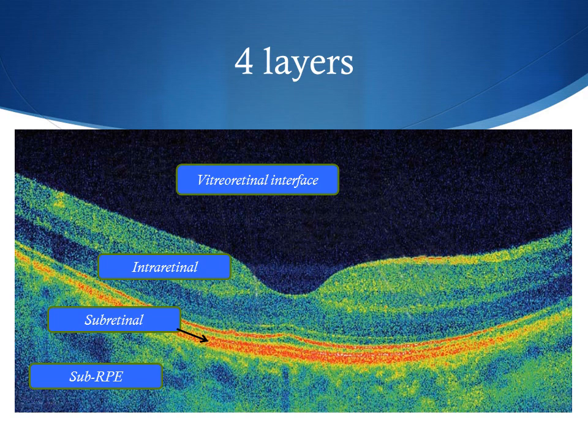When looking at OCT macular scans, I like to break up the retinal conditions into four different layers: the vitreoretinal interface, the intra-retinal area, the subretinal area, and the sub-RPE. Examples of vitreoretinal interface include vitreomacular traction. Areas of intra-retinal involvement include cystoid macular edema or CSME. Areas of subretinal include choroidal neovascular membranes. And areas of sub-RPE include choroidal nevi or choroidal melanomas.